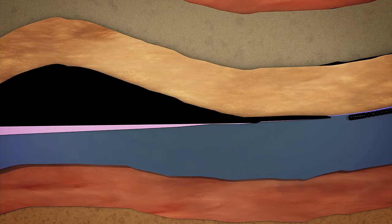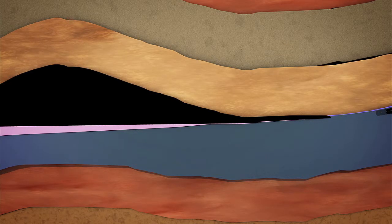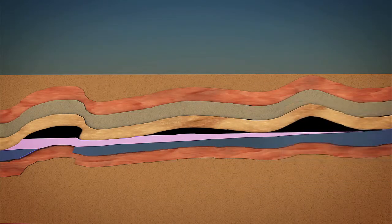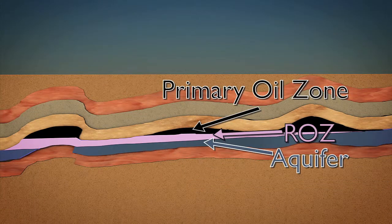On the east side, we're losing oil past the spill point, going out to the east — probably to a secondary entrapment somewhere off to the east. The ROZ that forms is a wedge shape with its thickest side on the west. The oil-water contact that existed in the paleo trap has now moved down and forms the base of the ROZ, while the new oil-water contact — which must be horizontal due to gravity effects — creates the top of the ROZ. So we have a wedge shape with its thickest side on the west side of the paleo trap.